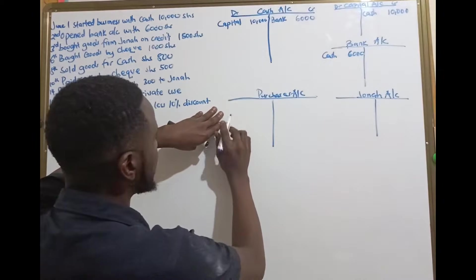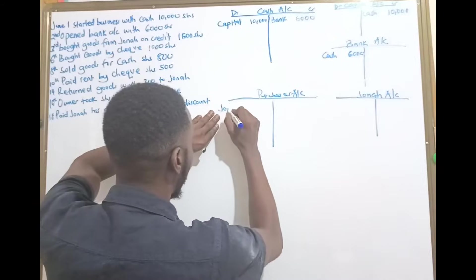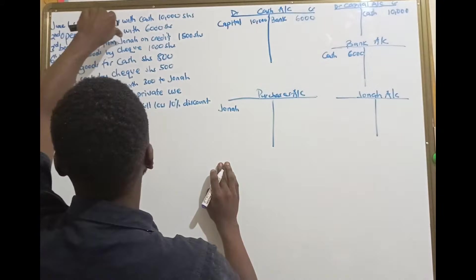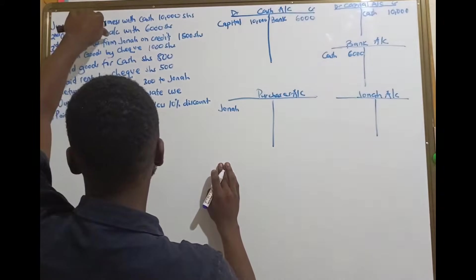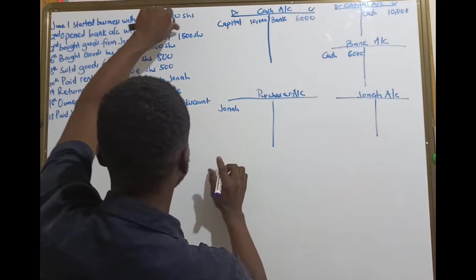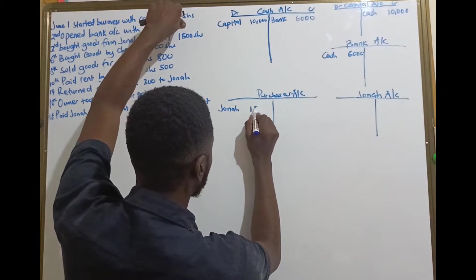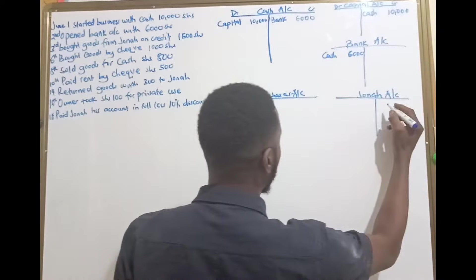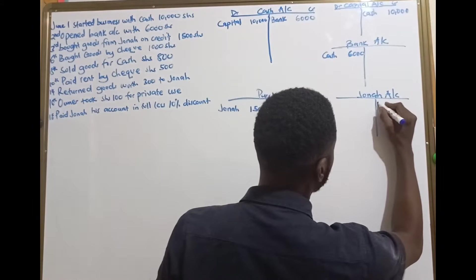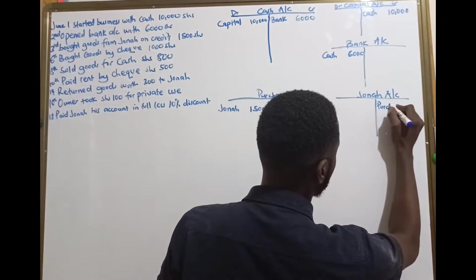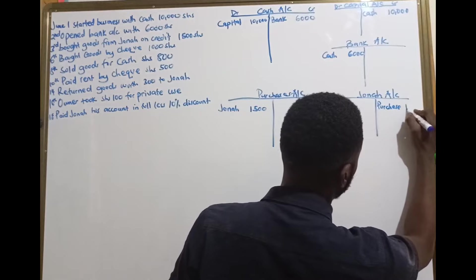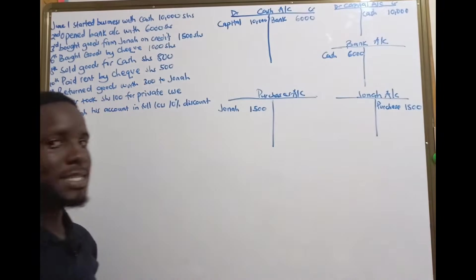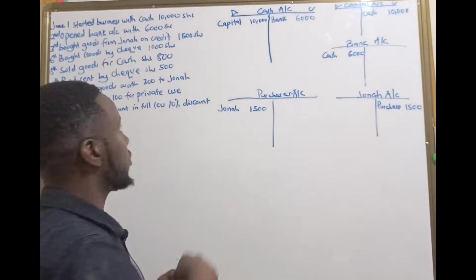Our purchases account is receiving from Jonah — bought goods from Jonah on credit worth 1,500. Now when we go to Jonah's account, it will be purchases worth 1,500. That's how we apply the double entry principle.